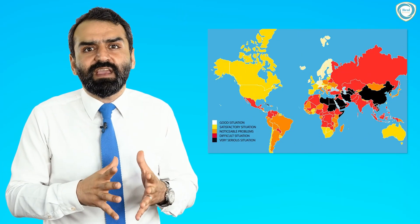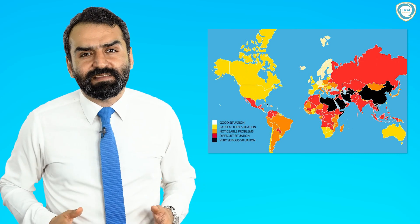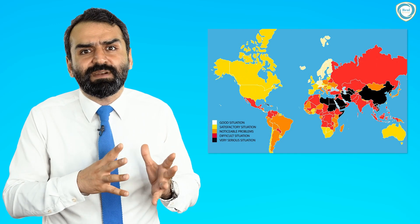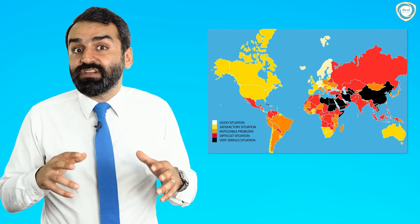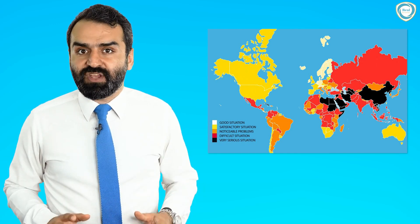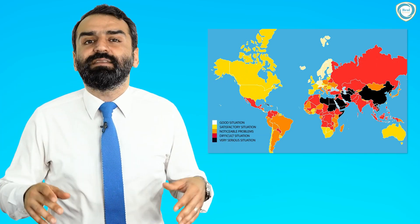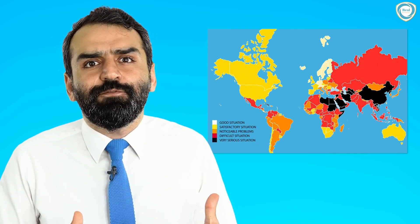There are many examples of this. Let's look at the Freedom of the Press index, which supposedly describes how freely writers and journalists can express themselves in a country. I say 'supposedly' deliberately — Turkey ranks 153rd in this index.